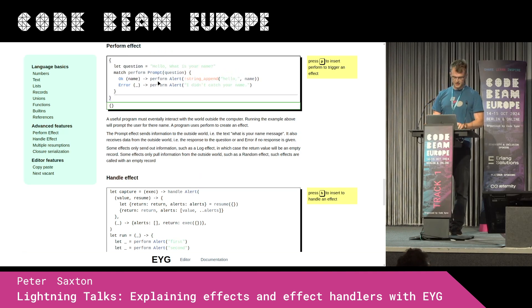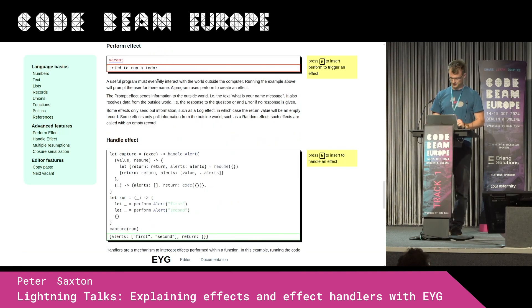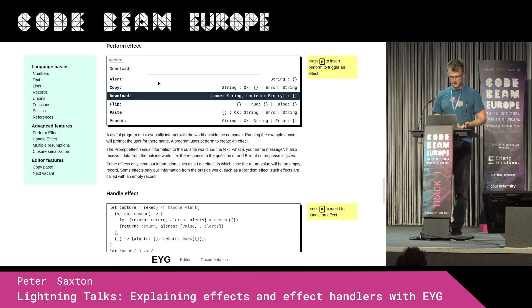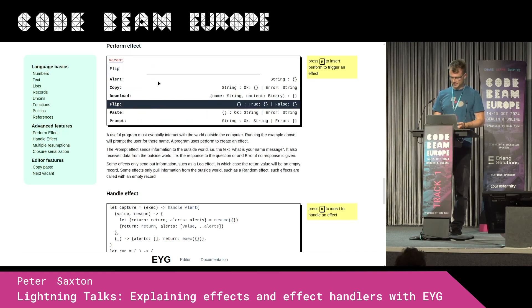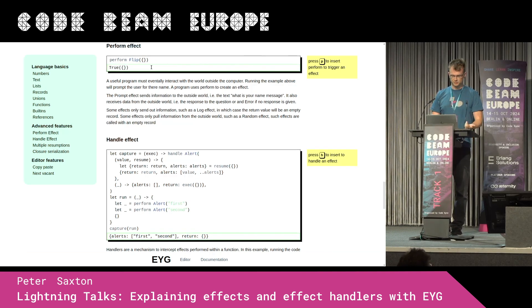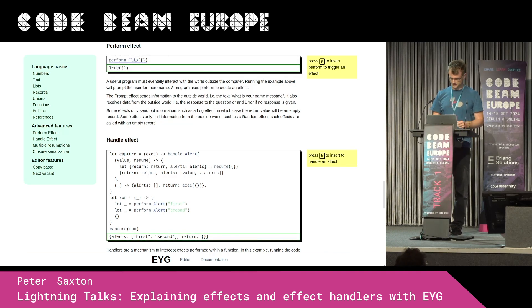So effects essentially represent everything that your program does that's not part of the core logic of a program. Another effect that we have, which is kind of interesting in this space, is non-determinism. So we want to flip something, and this is random — so true or false.